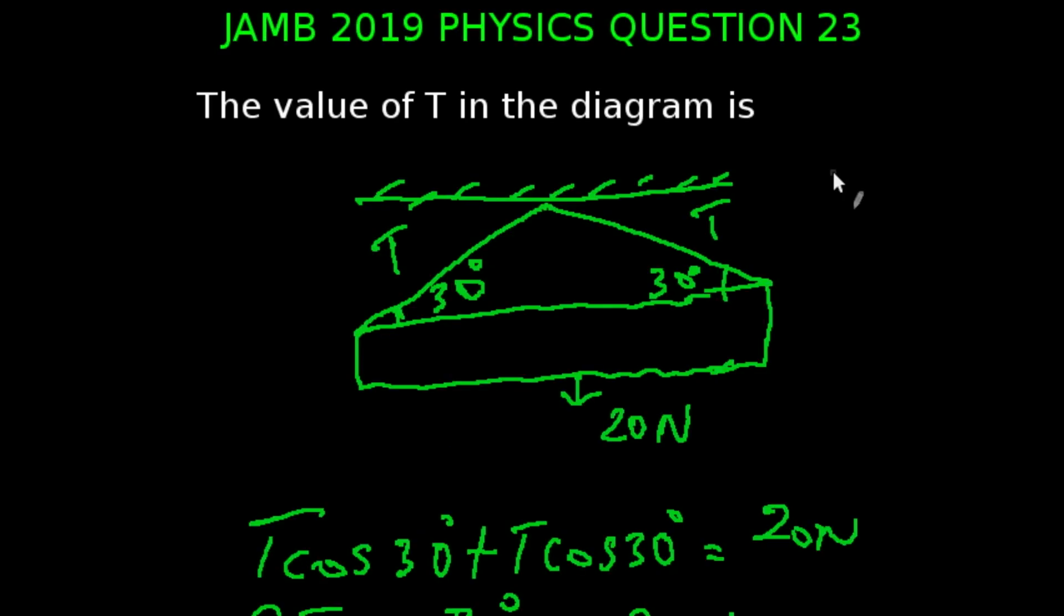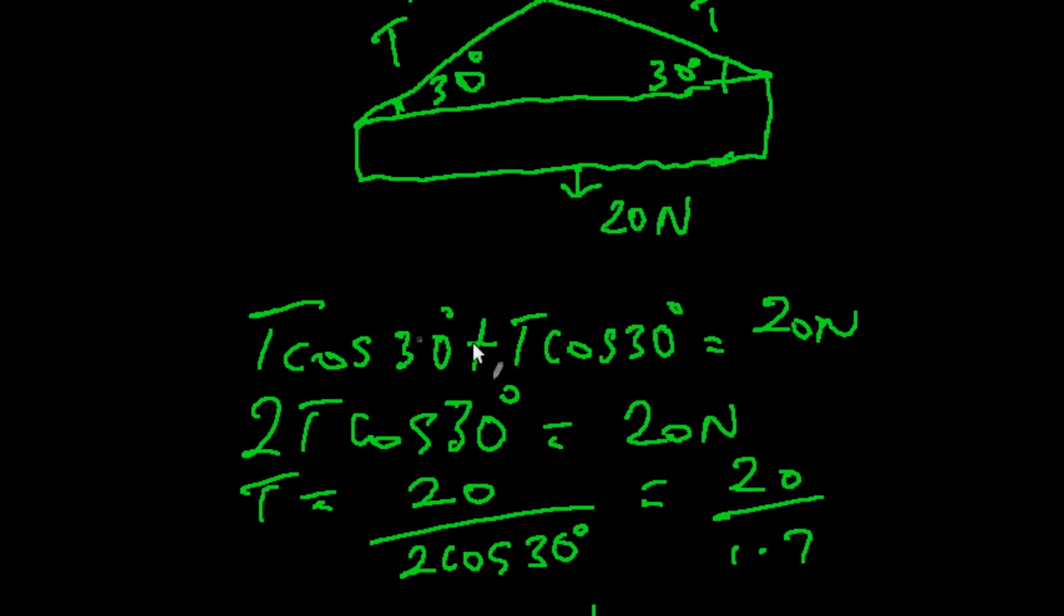Question 23 of the JAMB 2019 physics examination. The value of T in the diagram is, in this question, we're going to be using the formula: T sine 30 degrees plus T sine 30 degrees equals 20 newton. That is, the total vertical force is equal to the total force acting downwards. So if we simplify this, we're going to be having 2T sine 30 degrees equals 20 newton.